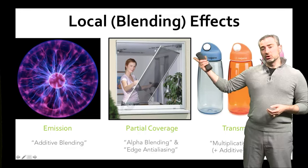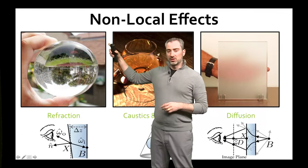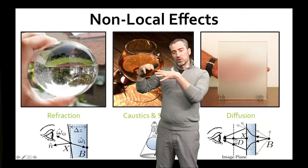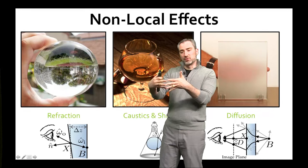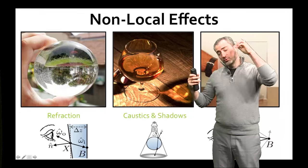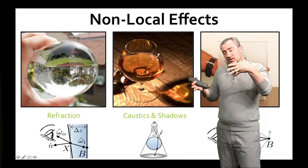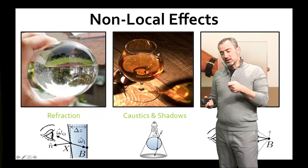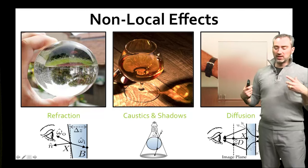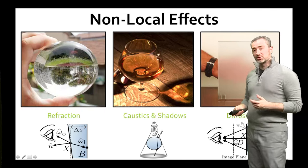In addition to these three local effects, there are three non-local effects where different pixels on the screen affect each other. Refraction happens where there's a change in index of refraction at an optical interface, and where the surface is curved we get light rays focusing. Caustics and shadows happen when light comes from a source through a transmissive medium and is tinted, and if there's an index of refraction change the light gets focused — like when you have a magnifying glass lighting up an ant. And diffusion is where light passes through a multiple scattering medium, takes a random walk, and comes out diffused, like frosted shower glass.